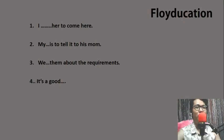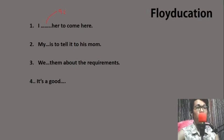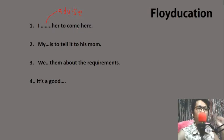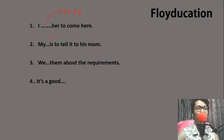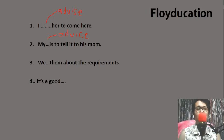And there you are. Let's try to check — I hope you got all the correct answers. Number one: 'I blank her to come here.' Are we going to use a verb or a noun? We're going to use a verb, so: 'I advise.' Let's go to number two: 'My blank is to tell it to his mom.' Are we going to use a verb or a noun? We're going to use a noun, so: 'My advice is to tell it to his mom.'